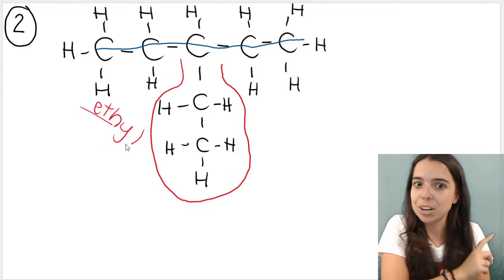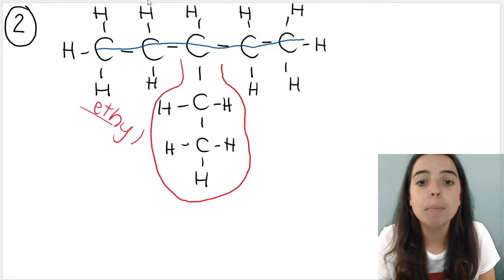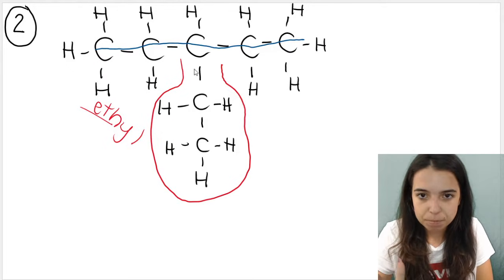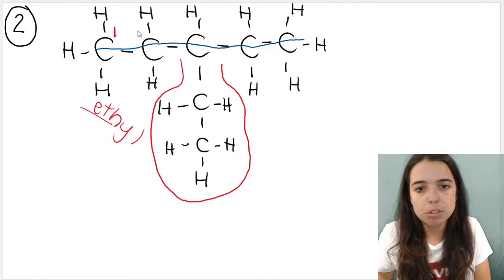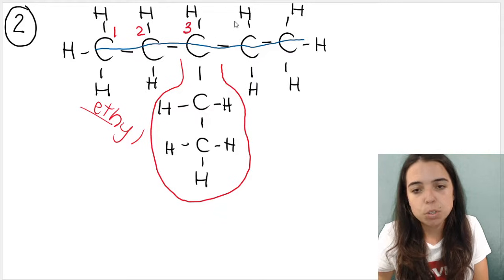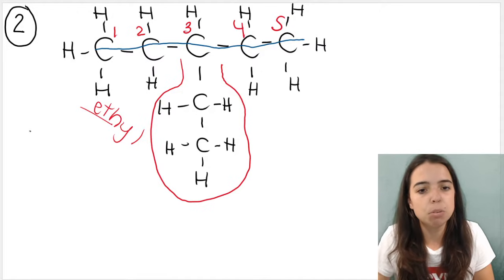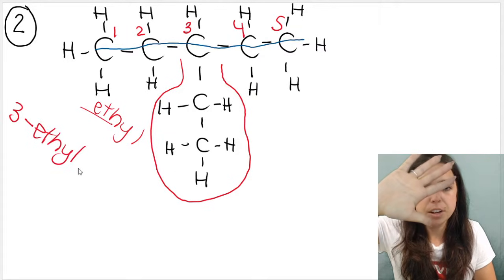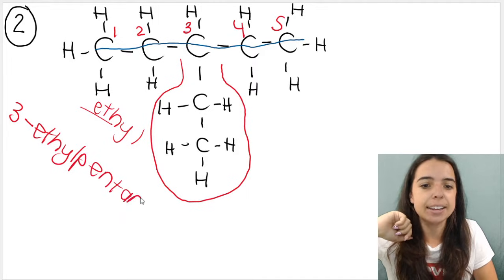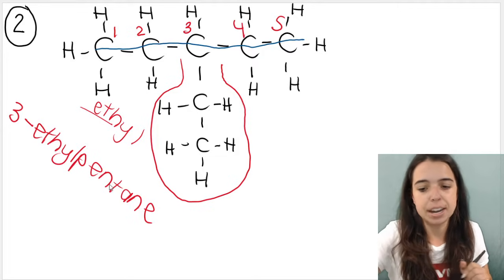We need to name the main chain so that the branch has the lowest number. The branch is in the middle of the compound, so it doesn't matter if I number from left to right or right to left — the branch will still be on carbon three. So our name is 3-ethylpentane: an ethyl group on carbon three, five carbons in the main chain, and it ends in -ane because it's an alkane.